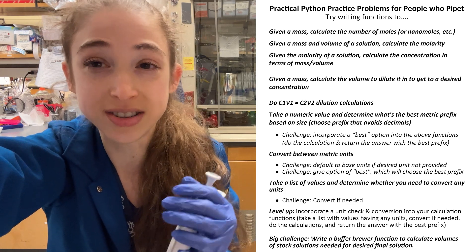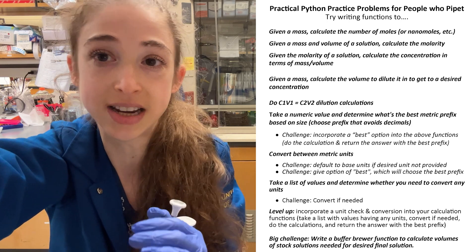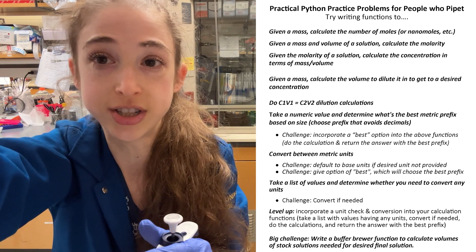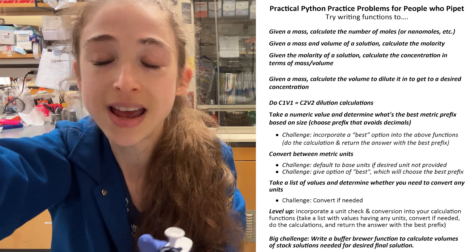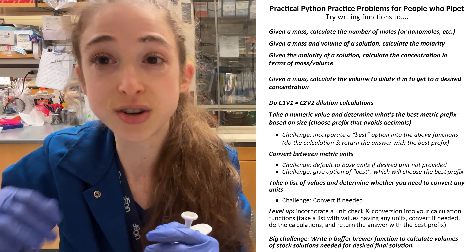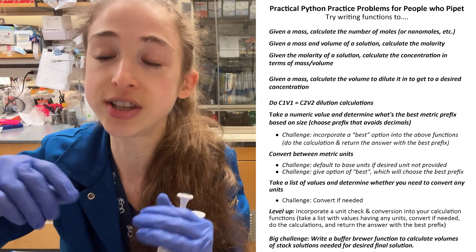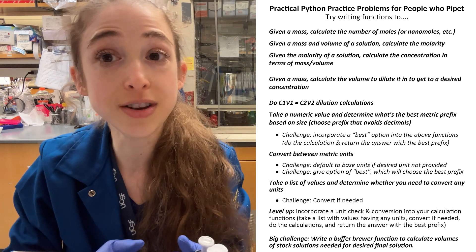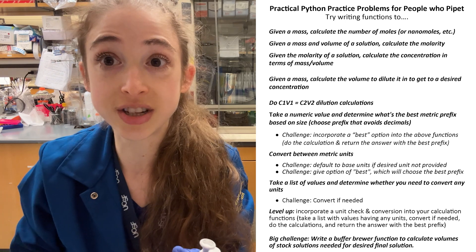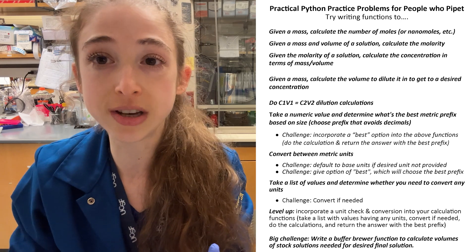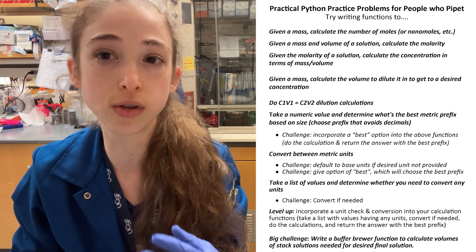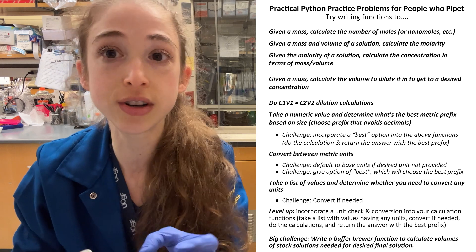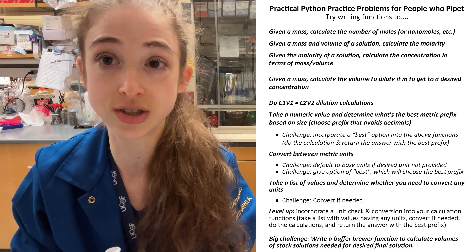You can really start taking things up a notch and combining these functions to say, give it a list of ingredients and stock concentrations and your final concentrations that you want, and write a buffer brewer function that's going to give you a table telling you how much of each different component to add. When you're making these functions, you'll realize you need other functions in there as well, like converting between units — going from micromolar to millimolar to liter, taking a list of values in different units and converting them all to the same unit so you can do those concentration calculations.